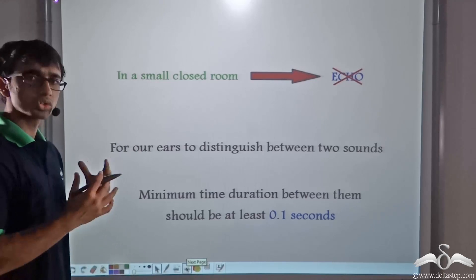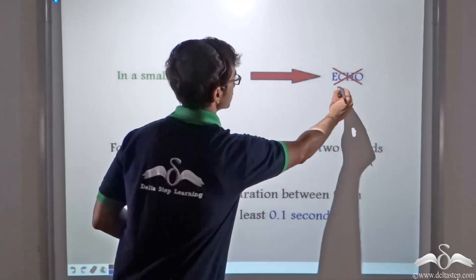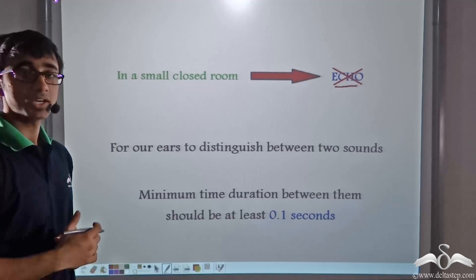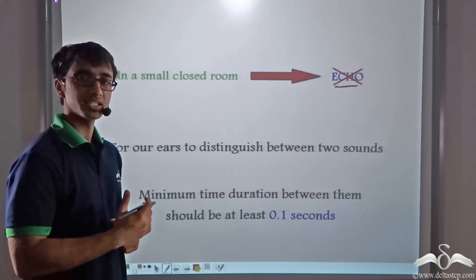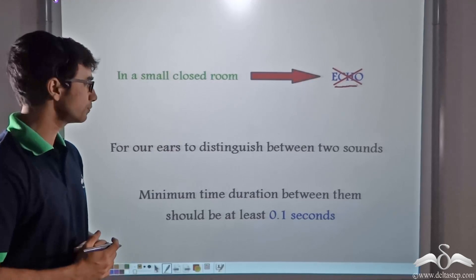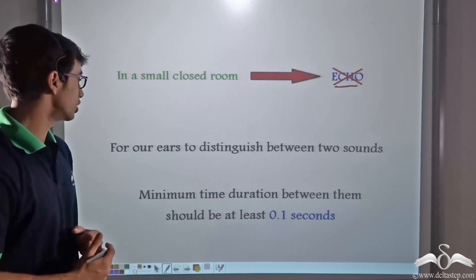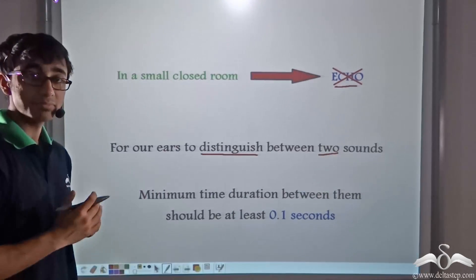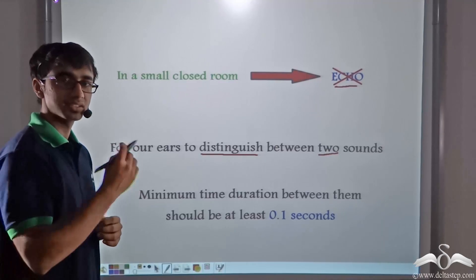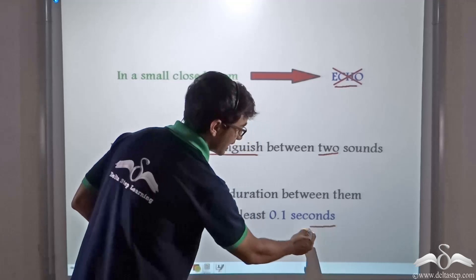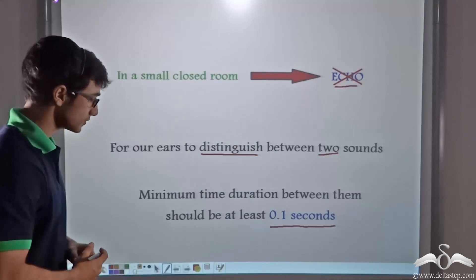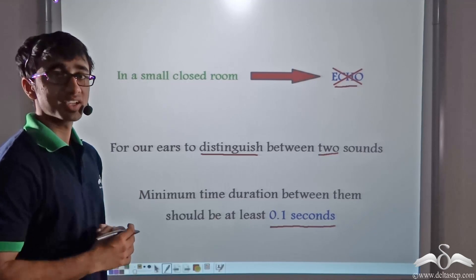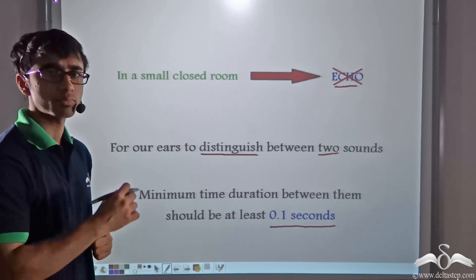Now in a small closed room, we cannot hear an echo. In a closed room there are repeated reflections, and we had also learnt that due to reflection we can hear echo. So why can we not hear echo in a small closed room? Because for our ears to distinguish between two sounds, there should be a time gap of 0.1 seconds between the sound and its reflection. That is why we are not able to hear an echo inside a small closed room — the time gap between the sound and the reflections is much less than 0.1 seconds.